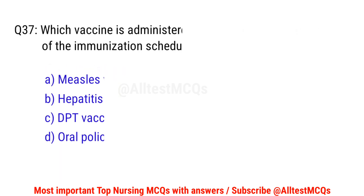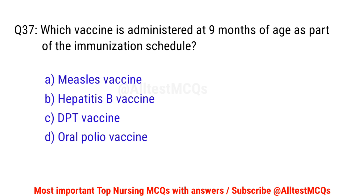Question number 37. Which vaccine is administered at 9 months of age as part of the immunization schedule? The right option is A: Measles vaccine.